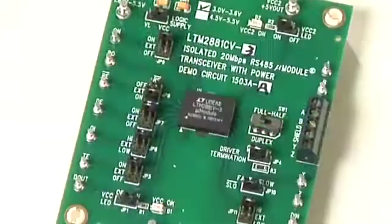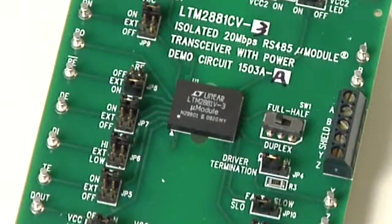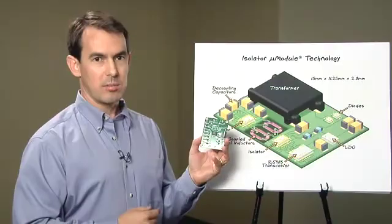Again, here's our new complete isolated power and transceiver solution, here shown on the demo board. Notice there are no required components around the part. The periphery components are simply jumpers and connectors for evaluating the operation of the part.